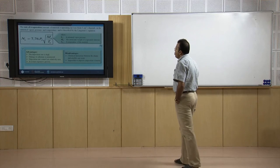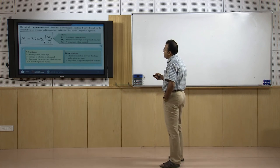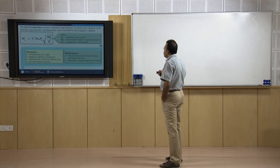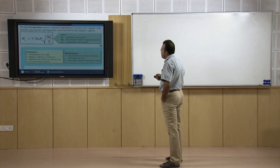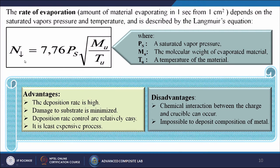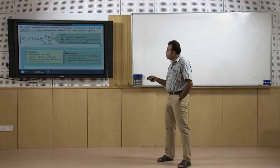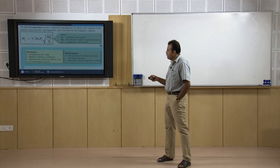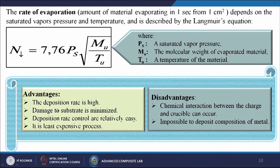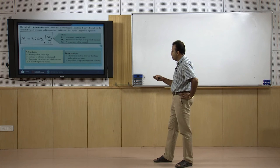The rate of evaporation — the amount of material evaporating per second from one centimeter squared — depends on saturated vapor pressure and temperature, described by Langmuir's equation: N = 776 · P_s · √(M_u / T_u), where P_s is the saturated vapor pressure, M_u is the molecular weight of the evaporated material, and T_u is the temperature of the material. Advantages of thermal evaporation include high deposition rate, minimized substrate damage, relatively easy deposition rate control, and it is the least expensive process. Disadvantages include possible chemical interaction between the charge and the crucible, and it is impossible to deposit certain metal compositions.